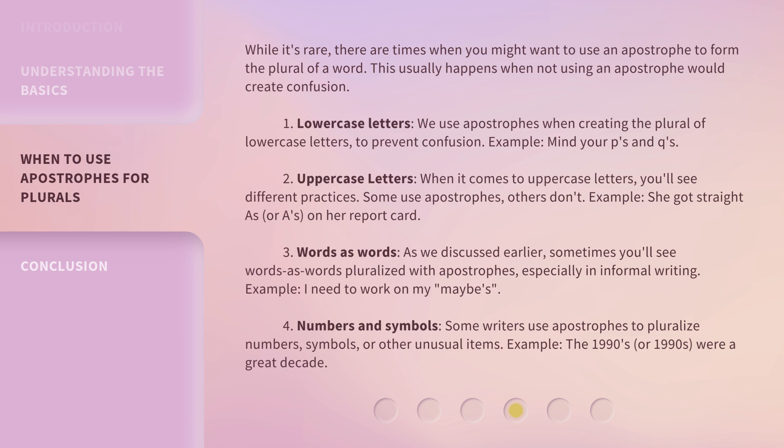3. Words as words: as we discussed earlier, sometimes you'll see words as words pluralized with apostrophes, especially in informal writing. Example: I need to work on my maybe's. 4. Numbers and Symbols: some writers use apostrophes to pluralize numbers, symbols, or other unusual items. Example: The 1990's — or 1990s — were a great decade.